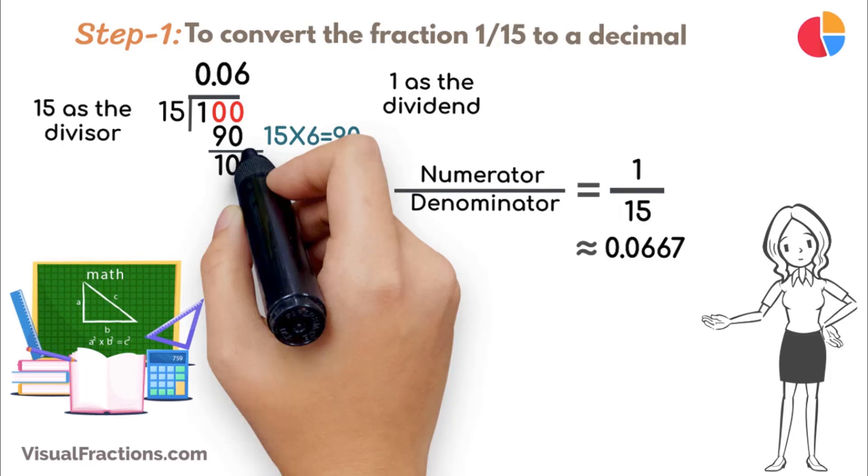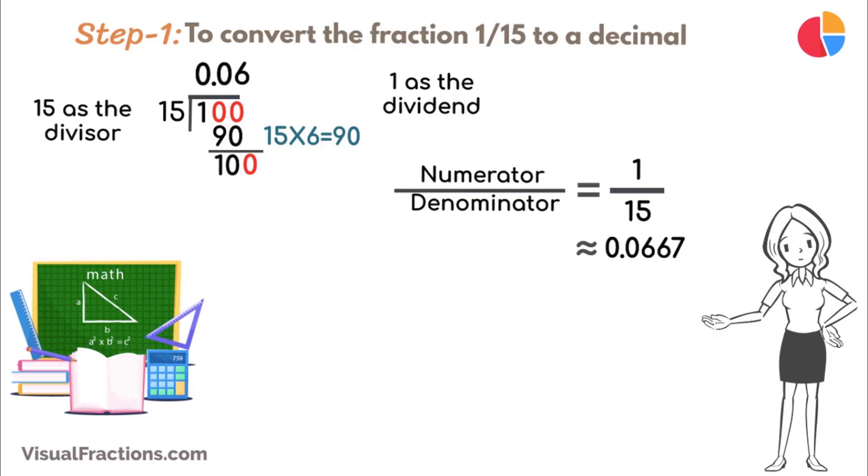Next, bring down another 0 to make it 100 again. 15 goes into 10 6 times, updating the quotient to 0.066.